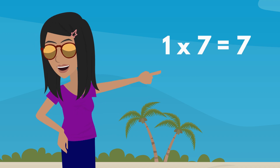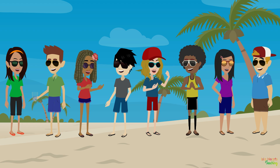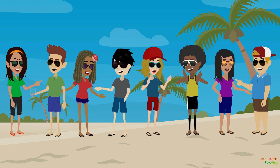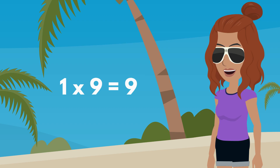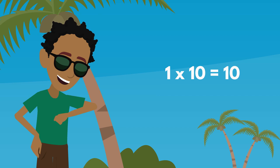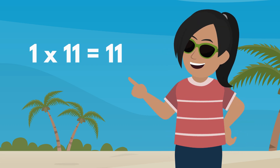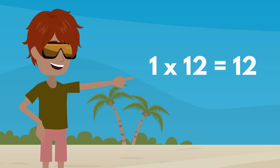One times seven equals seven. One times eight equals eight. One times nine equals nine. One times ten equals ten. One times eleven is eleven. One times twelve equals twelve.